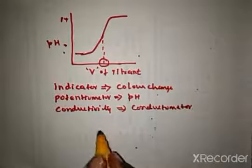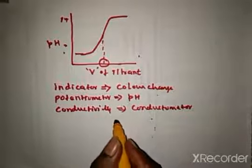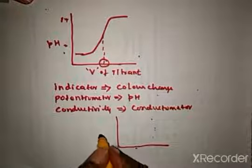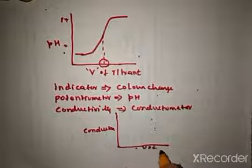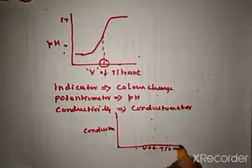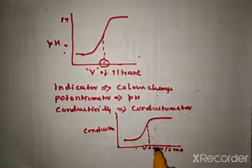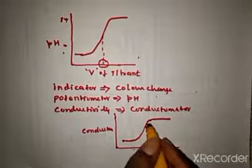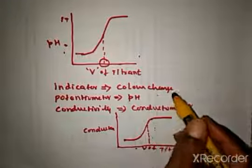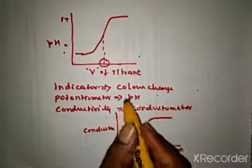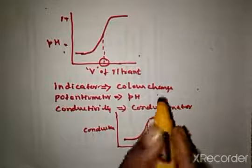We measure the conductance of the solution by each addition of the titrant, then draw a plot between conductance and the volume of titrant. From this we can find the volume of titrant needed to neutralize the unknown solution in the conical flask. Therefore, the volume of titrant can be measured using an indicator, through the change in pH, or by the change in conductivity.